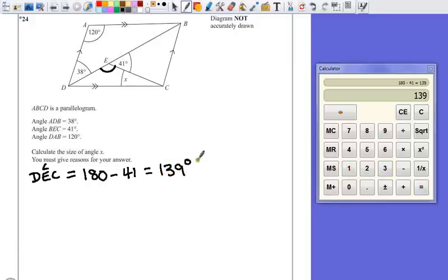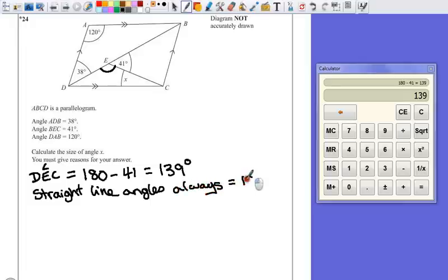Now, at the moment, that might be enough to get us a mark, but in this question it would not, because we've not explained or given a reason. The only explanation you need to give on this is something like straight line angles always equal 180 degrees. And that's like that. It's probably good enough to get you that mark there. So we've got one of our angles, 139 degrees.